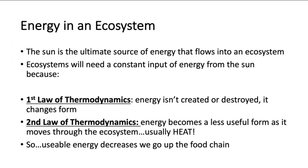On to how energy actually flows through an ecosystem. The ultimate source of energy in an ecosystem is the sun, even though we don't show it in a food web or food chain. Your first law of thermodynamics tells us energy is not created or destroyed — it's changing form. So sun energy is used by your producers to make things like glucose that gets passed along up your food web. But a lot of it is lost to the form of heat or waste — that's your second law of thermodynamics. Useful energy is decreasing as you move from producers up to top-level carnivores, and we usually lose about 90% of it to heat.